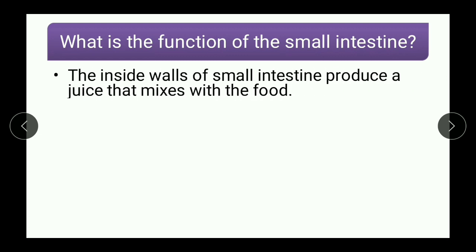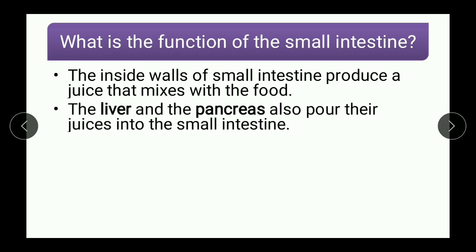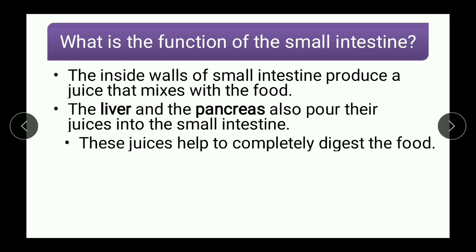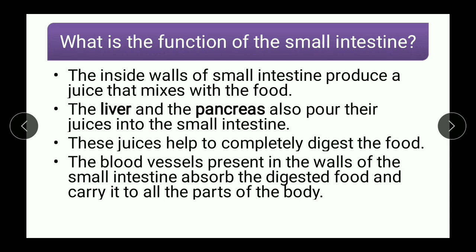First point: inside the walls of the small intestine produce a juice that mixes with the food. The liver and pancreas also pour their juices into the small intestine. These juices help to completely digest the food. The blood vessels present in the walls of the small intestine absorb the digested food and carry it to all the parts of the body.